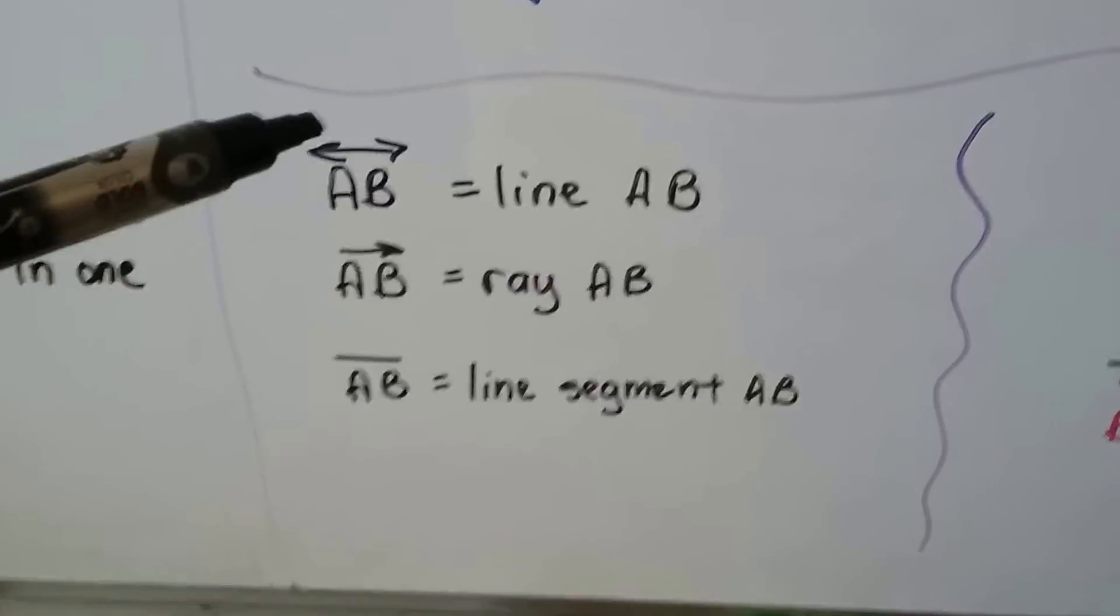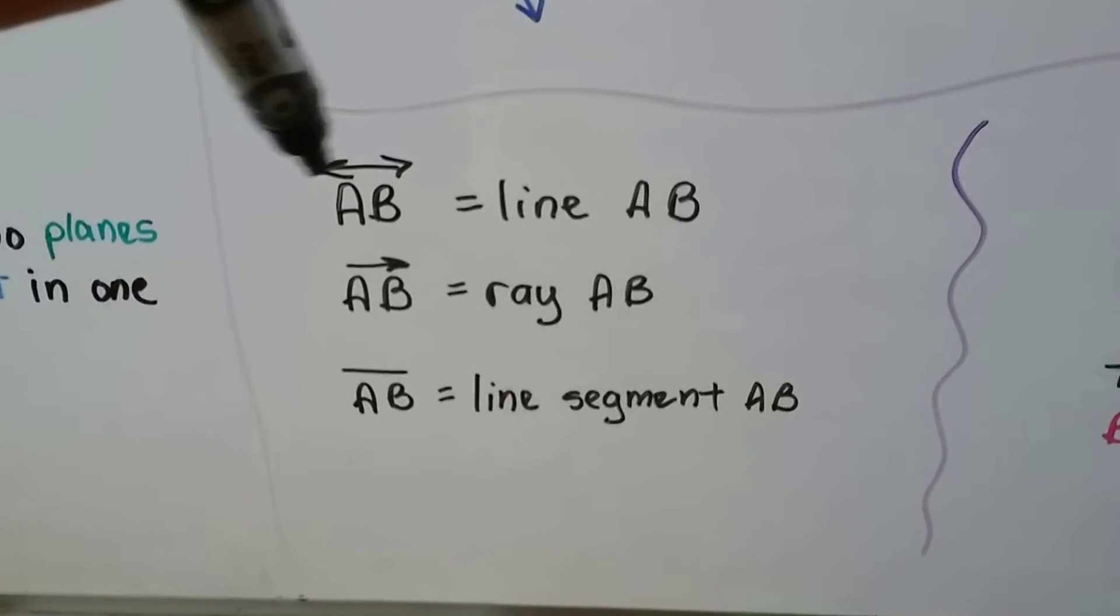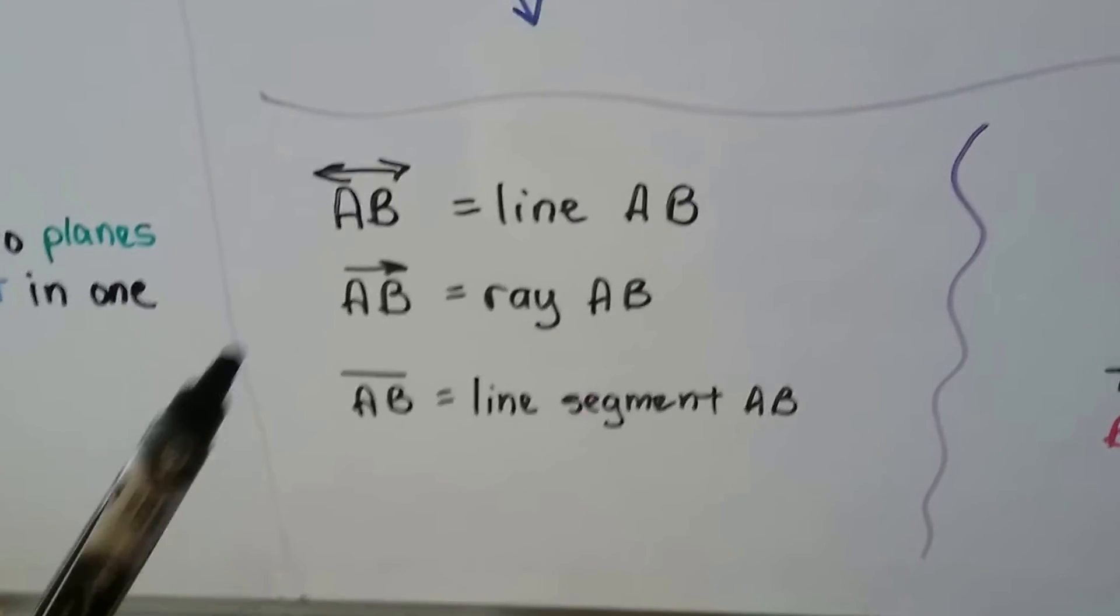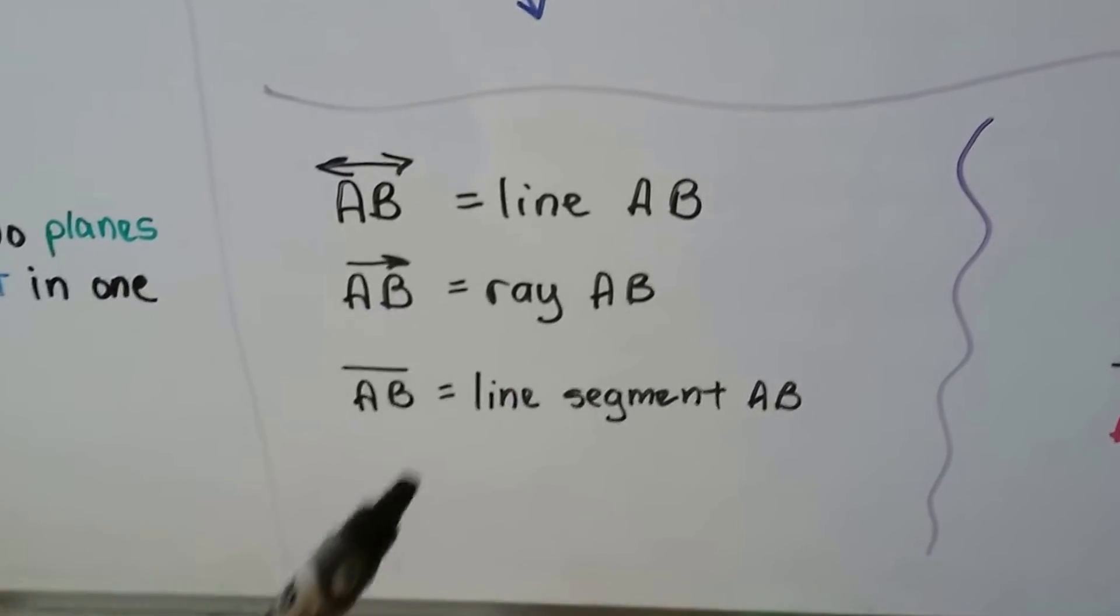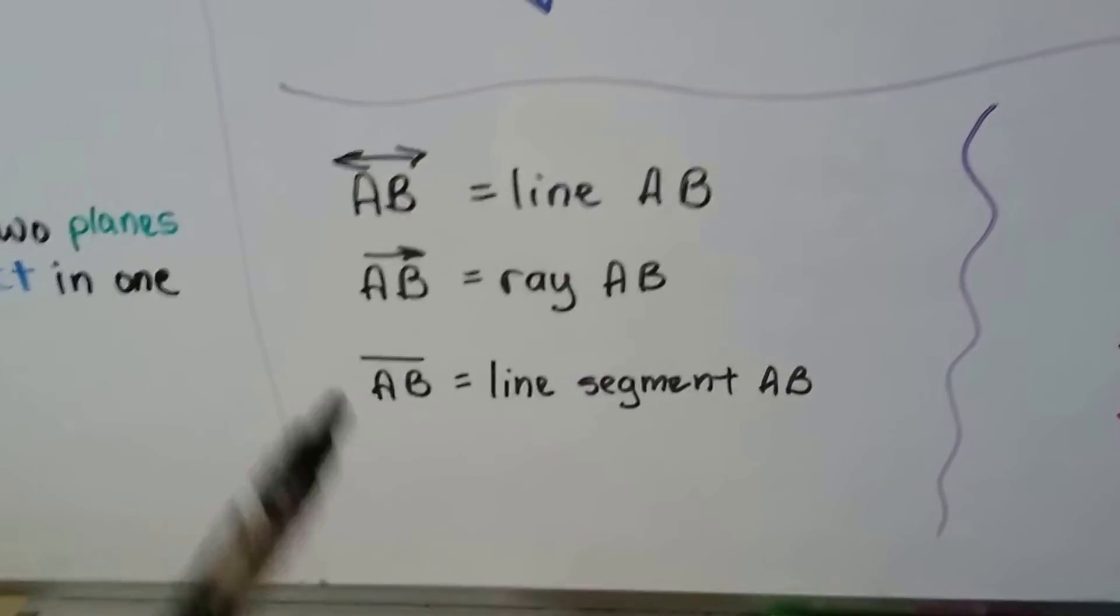So if we have line AB, then it is written like this with arrows on each side. If it's ray AB, it's just got one arrow. And if it's line segment AB, then it's just got this bar.